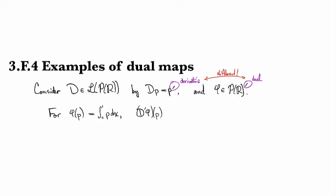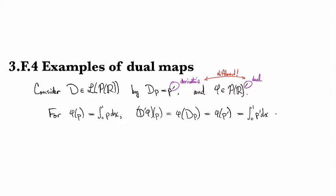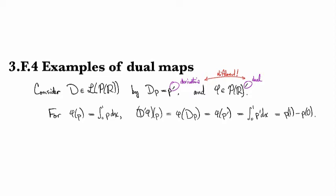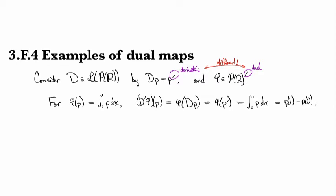And then remember that D prime is defined as pre-composition. So this is going to be phi of D applied to p, right? And then D operates by differentiating. So this is phi of p prime. And then phi works by integrating its argument. So this is now the integral from 0 to 1 of p prime dx, which by fundamental theorem of calculus is p(1) minus p(0).